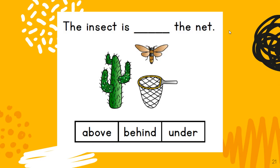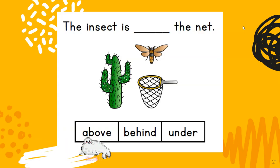The insect is near the net. Where is the bug or the insect — is he above the net, behind the net, or under the net? The insect is above the net.